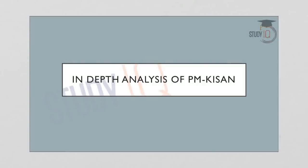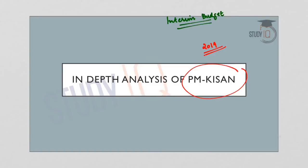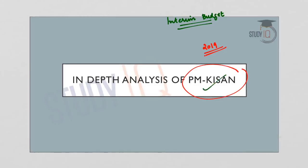Hello friends and welcome to Study IQ. I'm Joyce Joy and today in this lecture we will analyze the PM Kisan scheme, which was introduced in the interim budget of 2019. The recent interim budget presented by the union government gave a strong focus on the rural economy and the farm sector by introducing PM Kisan, which stands for Pradhan Mantri Kisan Samman Nidhi.